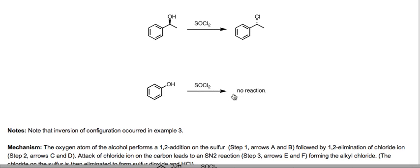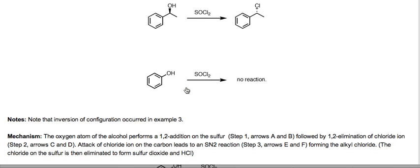The last example is one that does not work, but it's important to know why. Here we have phenol (hydroxybenzene), and when we treat it with thionyl chloride, the reaction does not proceed — thionyl chloride leaves phenol pretty much alone. This goes back to the SN2 mechanism: SN2 reactions don't occur on sp2 hybridized carbons, only on sp3 alkyl carbons.